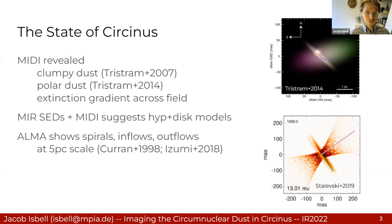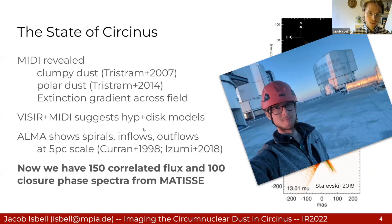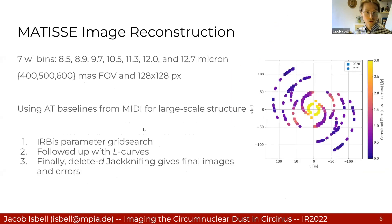The reason I'm talking to you today is because now with MATISSE we have 150 correlated flux spectra. And because MATISSE is a four-telescope interferometer, we have 100 closure phase spectra in the L, M, and N bands. Using these correlated fluxes, but especially the closure phase data which carry more information about the spatial distribution of the image, we can attempt image reconstruction.